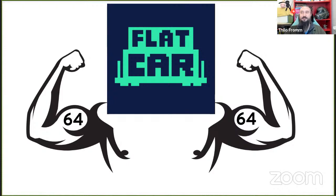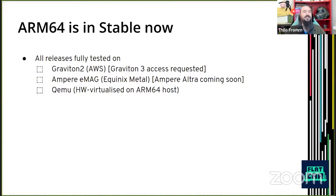This is the big ARM64 part — more or less open mic time after we give some intro to how Flatcar arrived at this major goal. We're in stable now. All releases since the alpha have been fully tested. The hardware currently runs on Graviton 2 — that's AWS virtualized. We've requested access to Graviton 3 and that's pending. We've also been using Ampere eMAG in the Equinix Metal bare metal cloud for ARM support testing on actual bare metal.